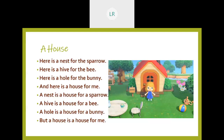Here is a nest for the sparrow, here is a hive for the bee, here is a hole for the bunny, and here is a house for me. A nest is a house for a sparrow, a hive is a house for a bee, a hole is a house for a bunny, but a house is a house for me.